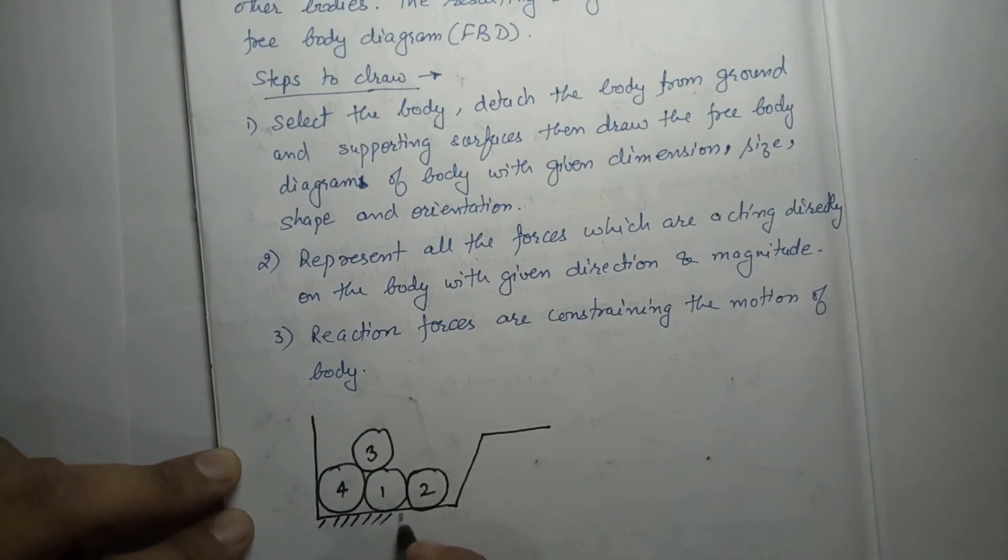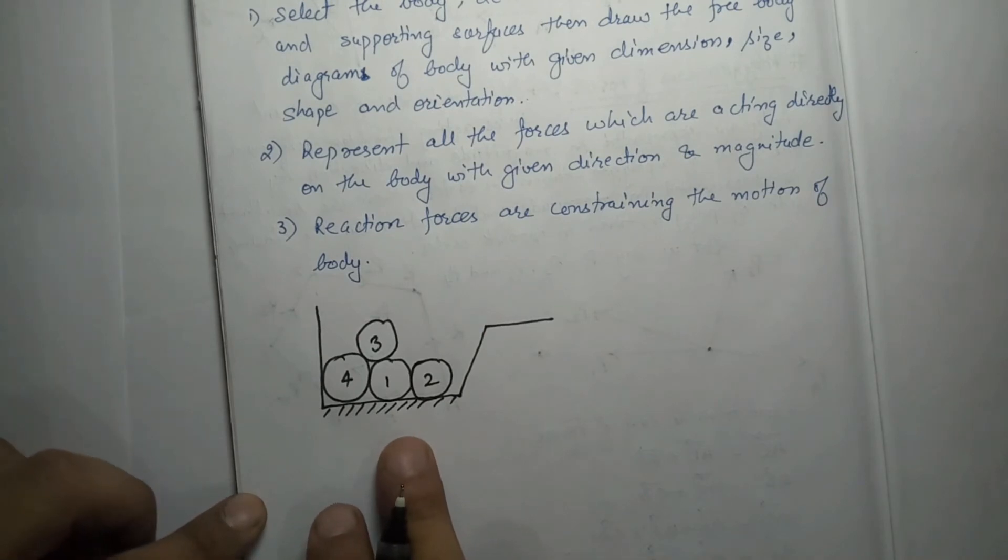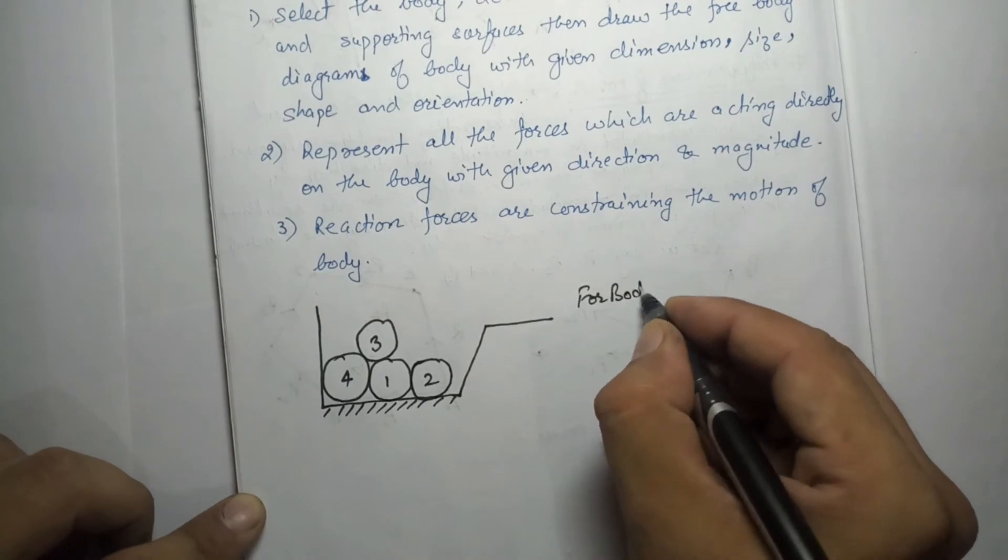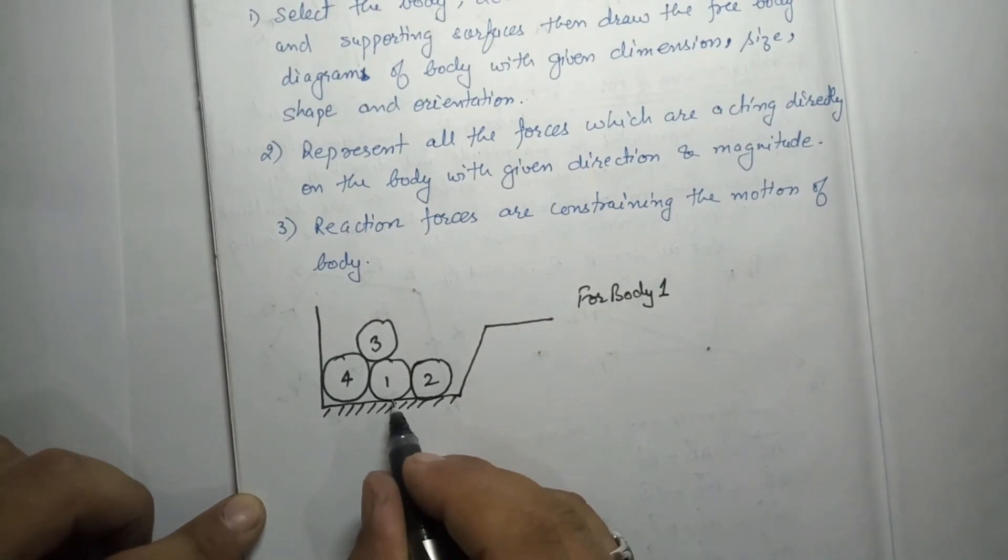It is on the ground. Now let's say this is the given object and we have to draw the free body diagram of this force system. The free body diagram will be drawn for any of the bodies. Let's say we are making the free body diagram for body one, or we can say the force for this surface one.